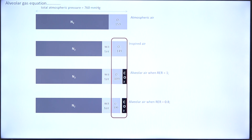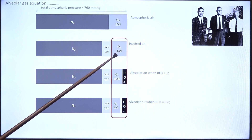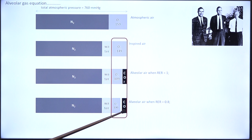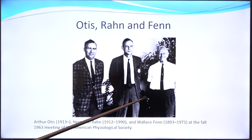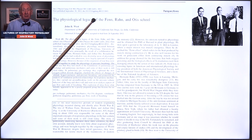The alveolar gas equation is a contribution by an illustrious trio of respiratory physiologists. They went on to describe the relationship between oxygen in the inspired air and oxygen and carbon dioxide in alveolar air — that is indeed the alveolar gas equation. The trio comprises Professor Wallace Fenn, Herman Rahn, and Arthur Otis.